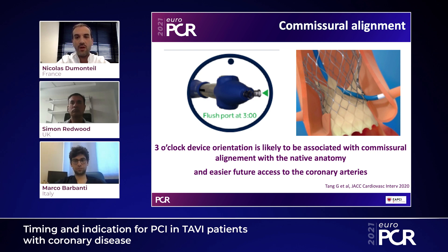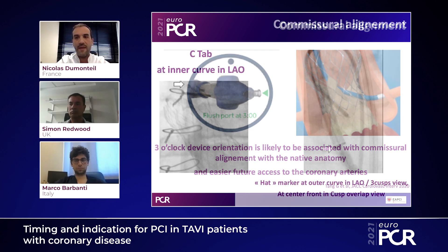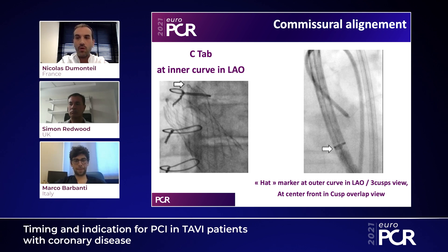For the Evolut frame, good commissural alignment can be anticipated at the time of introduction by positioning the delivery catheter with the flush port at 3 o'clock. This can also be validated once inside the aortic root. There is a heart marker at the distal tip of the Evolut frame: in LAO or Coplanar view, if the heart marker is at the outer curve, you'll likely have good commissural alignment; in cusp-overlap view it should be in the center front. Once the valve is released, a C-tab at the outflow portion of the frame located at the inner curve in LAO confirms proper commissural alignment.